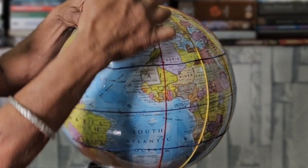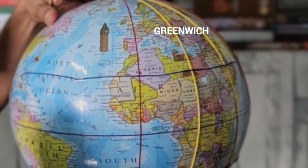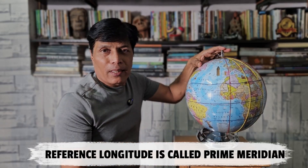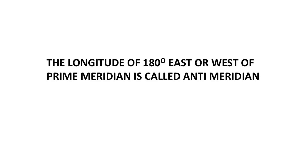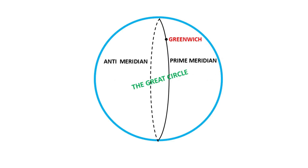Currently, the longitude that passes through Greenwich town near London in England, where the Royal Observatory is located, is taken as the Global Prime Meridian. This particular longitude was selected as Global Prime Meridian in the year 1884 during the International Meridian Conference held in Washington DC in the US. Delegates from 25 countries participated in this conference and they decided that the longitude passing through Greenwich should be considered as the Prime Meridian for global use. The time at Greenwich is taken as the reference time to set all the watches and clocks across the world, and this time is known as Greenwich Mean Time — GMT.